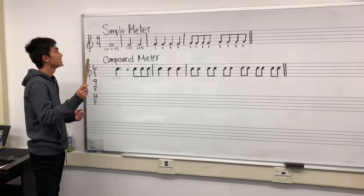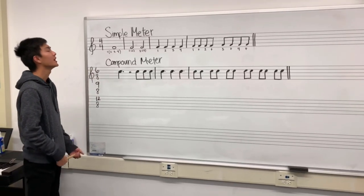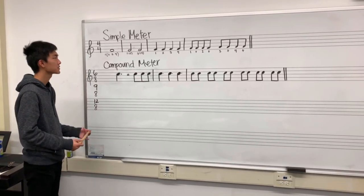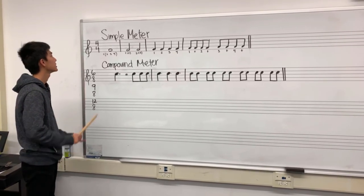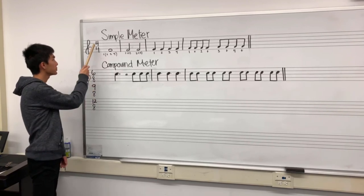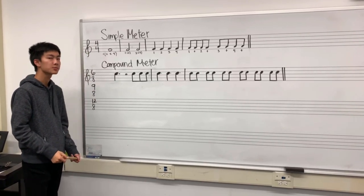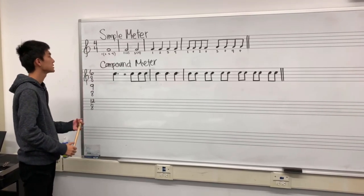Here we go! So to start off, we have Simple Meter, and we call it Simple Meter because it's the most basic form of time signature in music, also known as 4-4. The top number represents the beats per measure, and the bottom represents the note value.